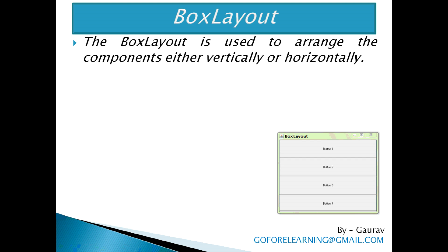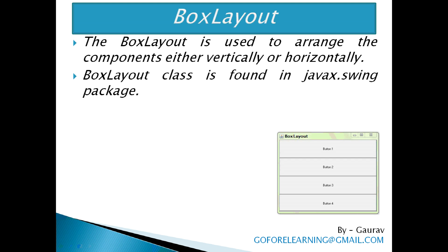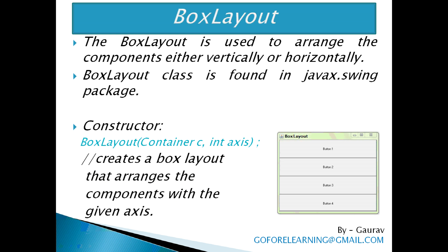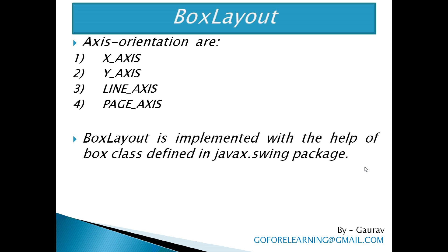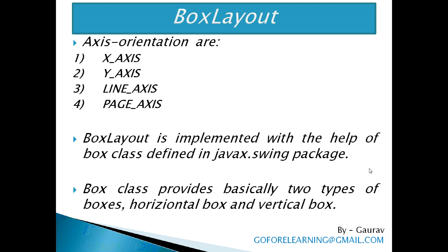Next is Box Layout. The Box Layout is used to arrange components either horizontally or vertically. Box Layout class is found in the javax.swing package. The constructor BoxLayout(Container c, int x) creates a Box Layout that arranges components with the given axis. All components inside a JPanel object are arranged using axis orientation. The axis orientations are: X_AXIS — components are arranged along the X-axis; Y_AXIS — components are arranged along the Y-axis; LINE_AXIS — components are arranged like lines in a text; and PAGE_AXIS — components are arranged like lines in several pages. Box Layout is implemented with the help of the Box class defined in javax.swing package. The Box class object can be imagined as an invisible area where components are placed using Box Layout. Box class provides two types of boxes: Horizontal box and Vertical box.